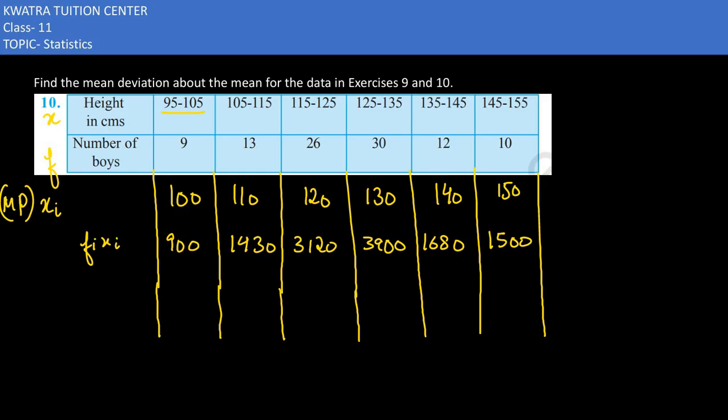Next step, we need to find xi minus x bar, but first we need to find the mean. Add all fi times xi, that would give you summation fi xi which is 12530. And add the frequency, which is 100.